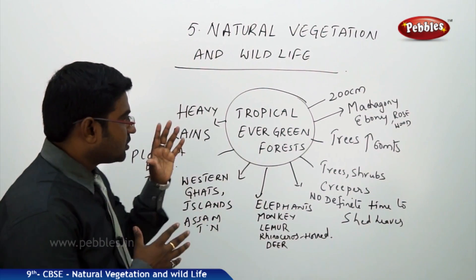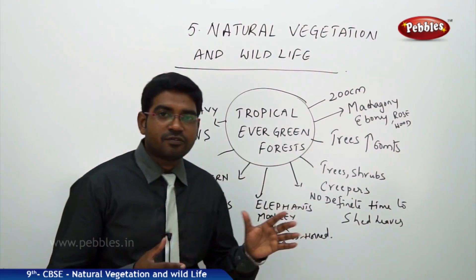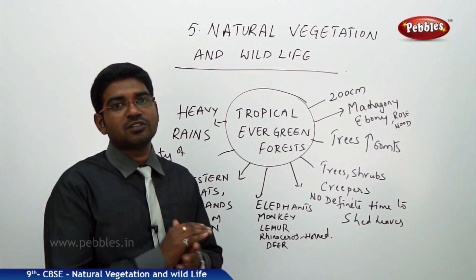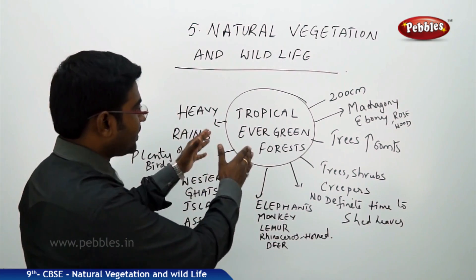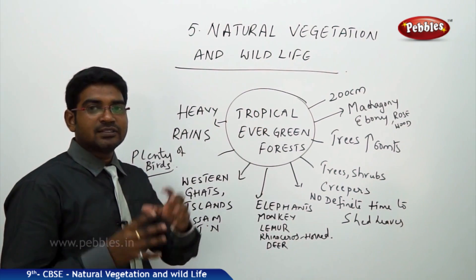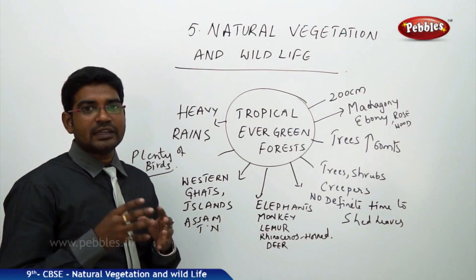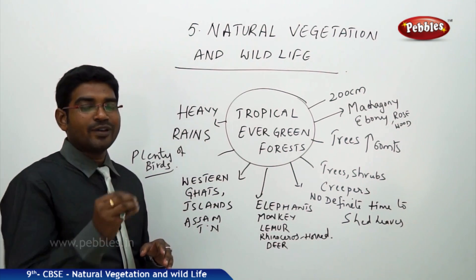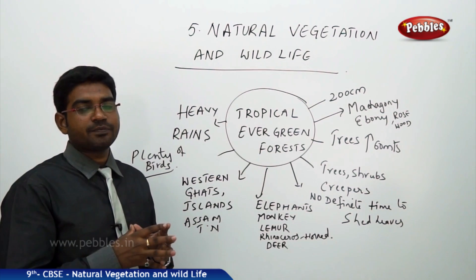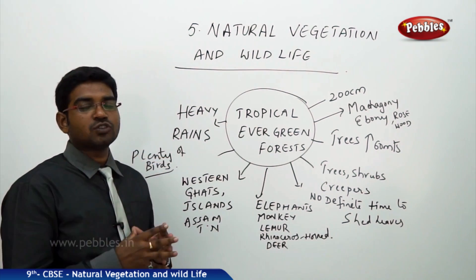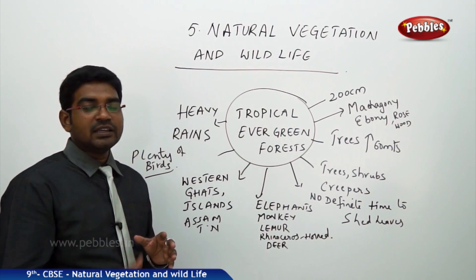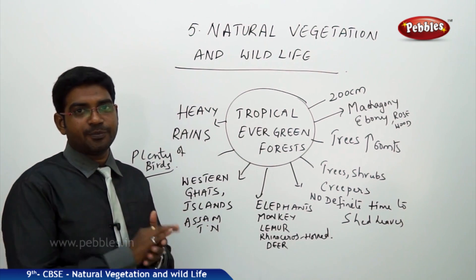Now we shall discuss the types of vegetations. The first major one is the tropical evergreen forest. The tropical evergreen forest is commonly found in our country in the regions of Western Ghats, in Lakshadweep and the Andaman and Nicobar Islands, some parts of the upper Assam region, and also along the coast of Tamil Nadu.